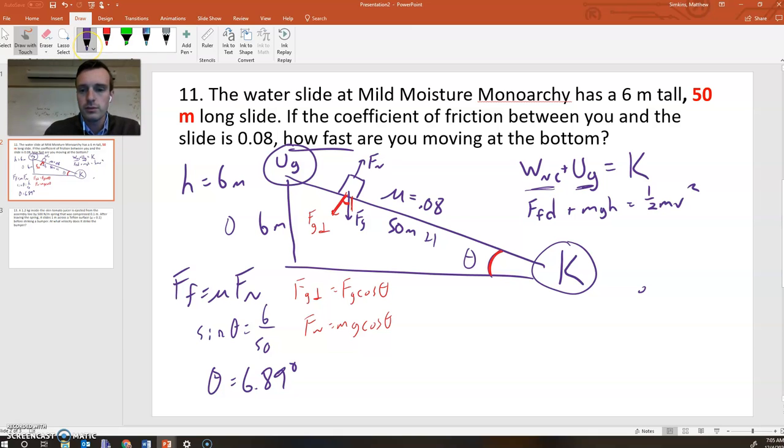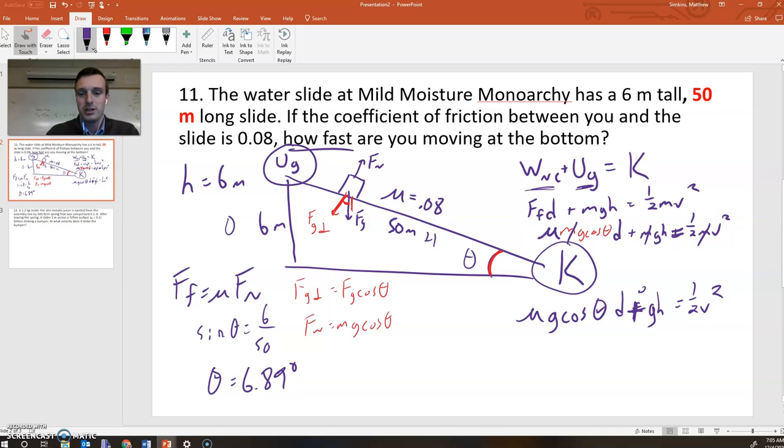Now, what we're going to do here is we have Ff, so that's going to be equal to mu times Fn, which we just found to be Mg cosine of theta times D plus Mgh equals one-half Mv squared. Now, the masses are going to cancel on each of these terms, so what are we left with? We got mu G cosine of theta D plus Gh. So now we're just going to plug everything in.